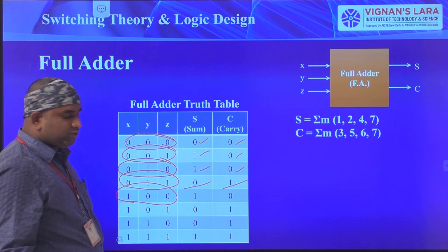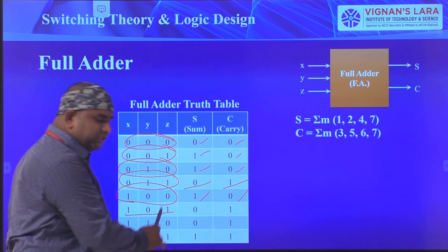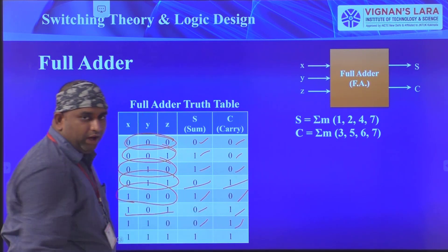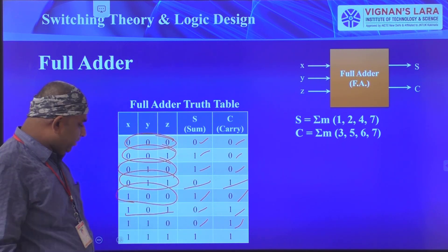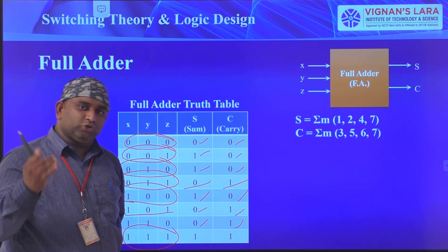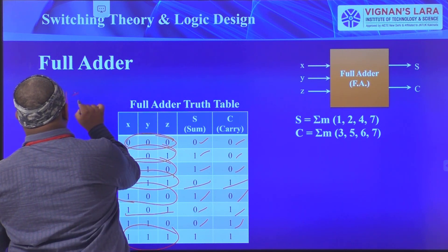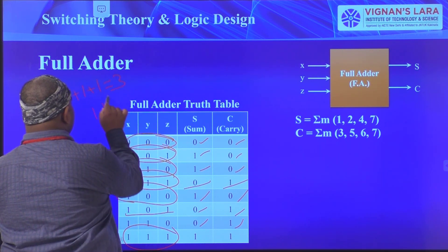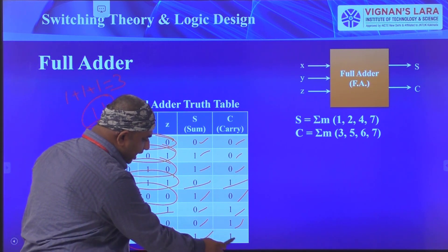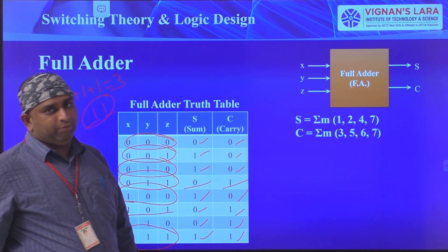For 1+0+1 and 1+1+0, we get two 1's, so sum=0 and carry=1 in both cases. For the last combination, 1+1+1 equals 3 in decimal, and the binary equivalent of 3 is 1,1. Here the LSB 1 is the sum and the MSB 1 is the carry, so sum=1 and carry=1. This completes the full adder truth table.